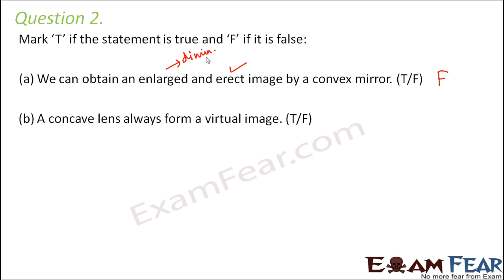A concave lens always forms a virtual image. That's true because a concave lens will always form virtual, erect and diminished image.